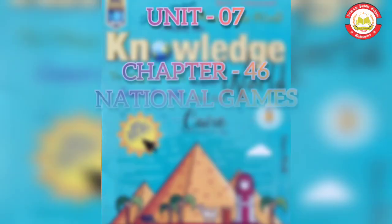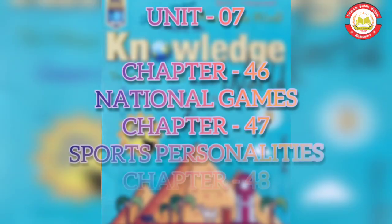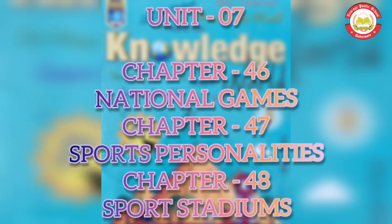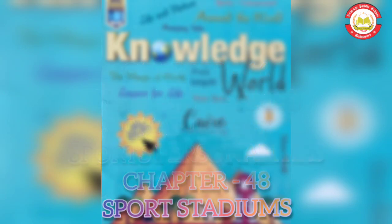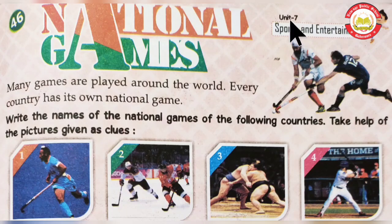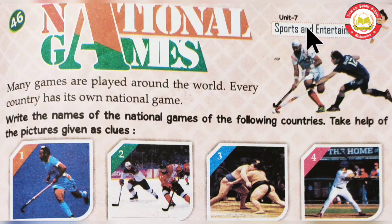Today we are starting our new unit, Unit No. 7. Chapter No. 46: National Games. Chapter No. 47: Sports Personalities. And Chapter No. 48: Sports Stadiums. Let's get started. Unit 7: Sports and Entertainment. Chapter No. 46: National Games.